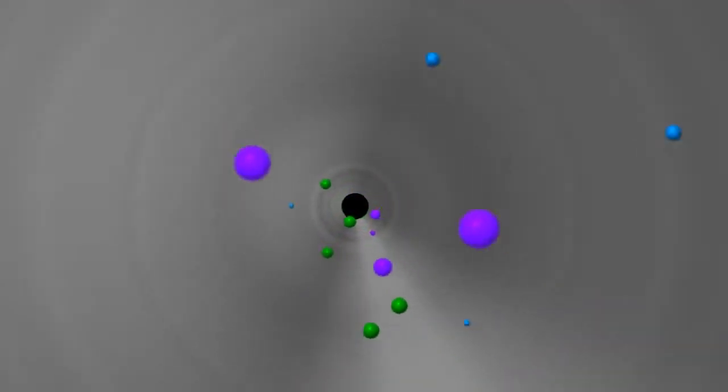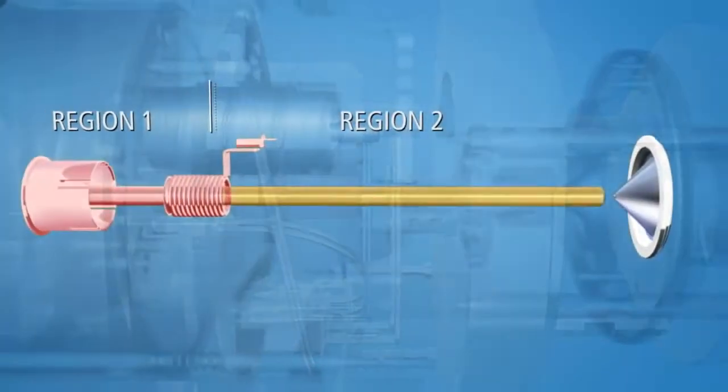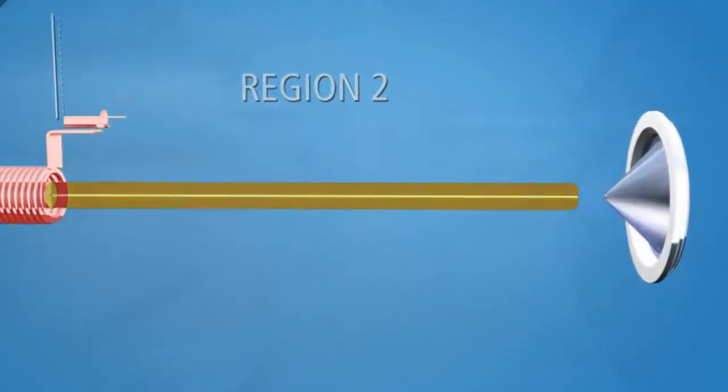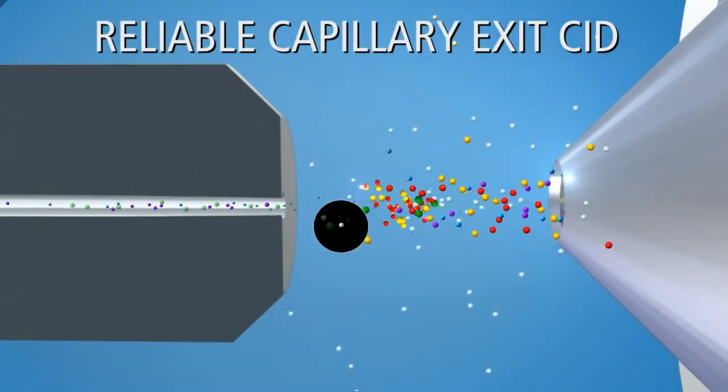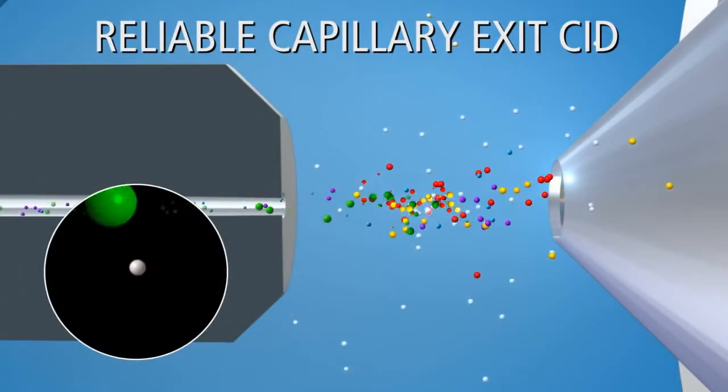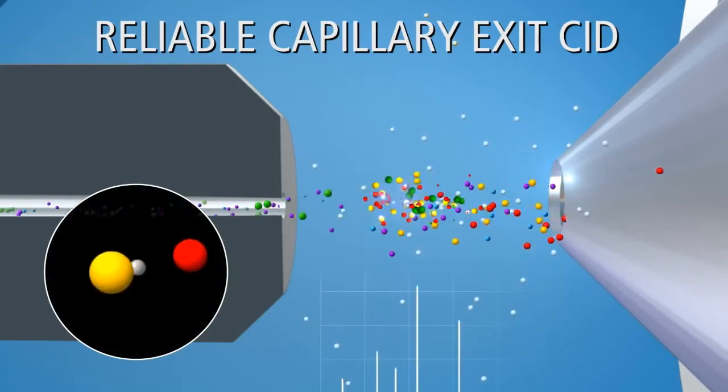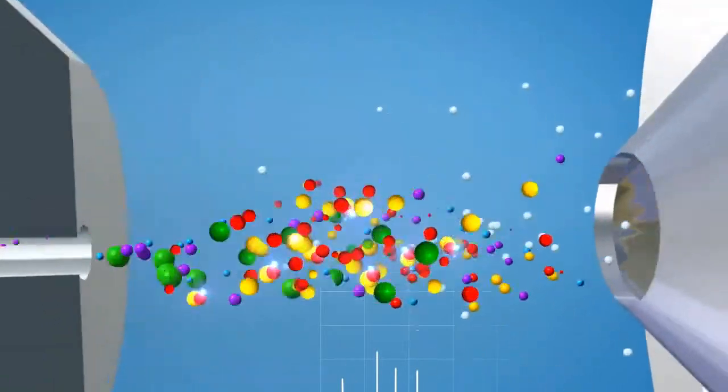The instrument's unique ion inlet features a proprietary design that decouples the source from the ion optics, allowing you to independently modulate the voltage in each region. This enables the use of collisionally induced dissociation to fragment ions at the capillary exit. By performing CID in its cleaner environment, you obtain exact mass data on all fragments for additional structural information and confident quantitation.